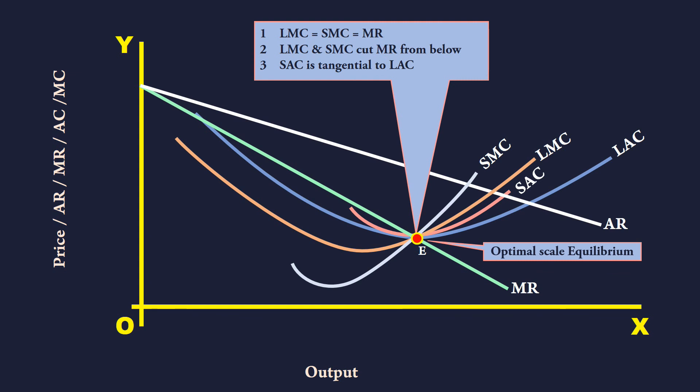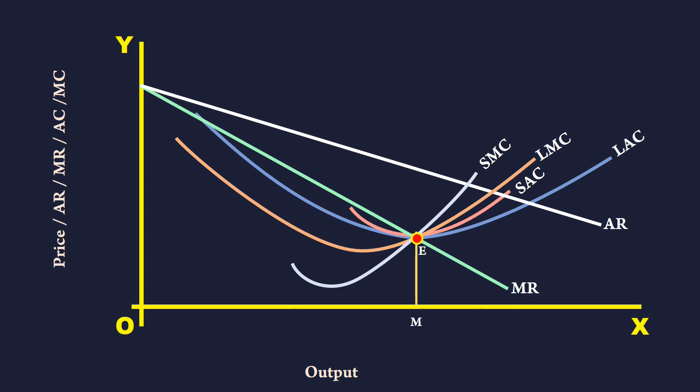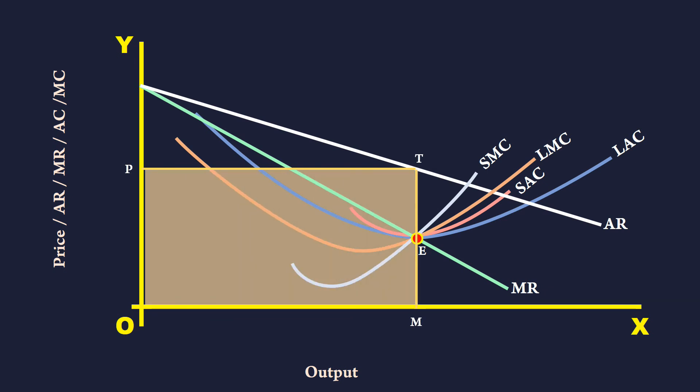The other important things that we are to know: the equilibrium output is M units, the equilibrium monopoly price is P. The firm makes super normal profit. Its total revenue is OPTM, its total cost is OSEM, its super normal profit is SPTE.